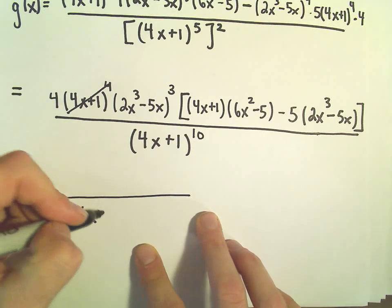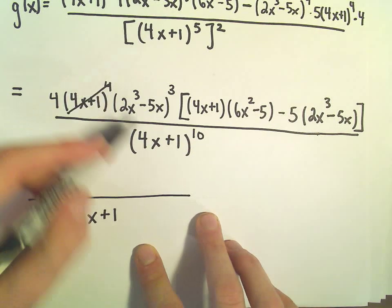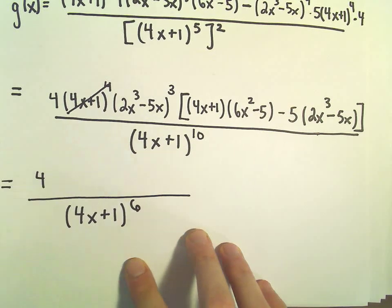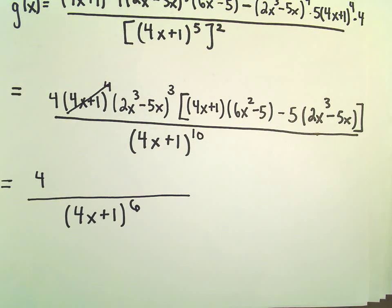We're just subtracting exponents. It's like having x to the 4th over x to the 10th. In this case, we would be left with 4x plus 1 to the 6th in the denominator.